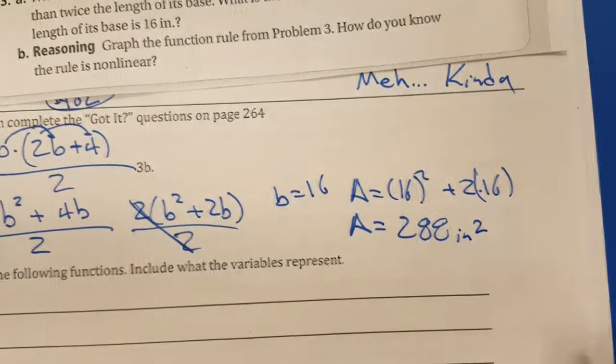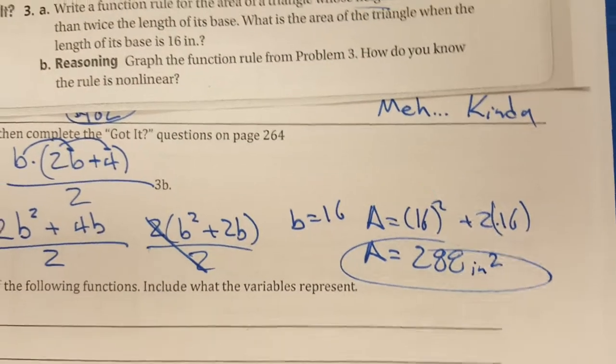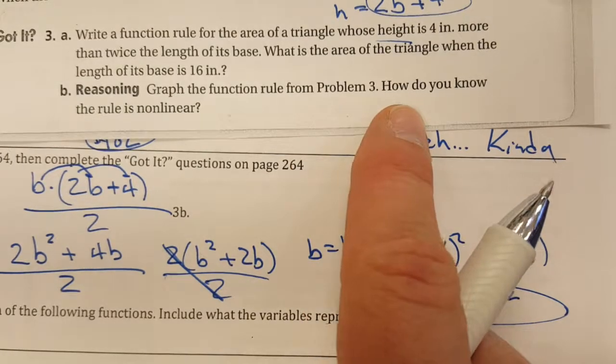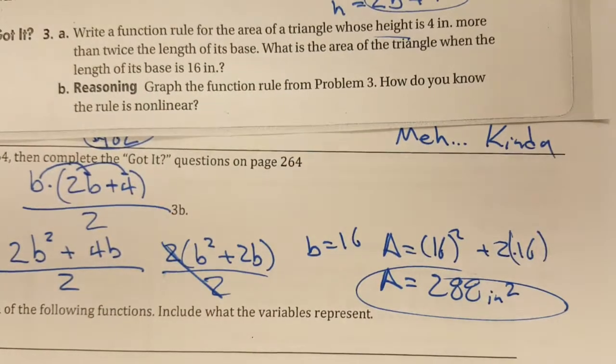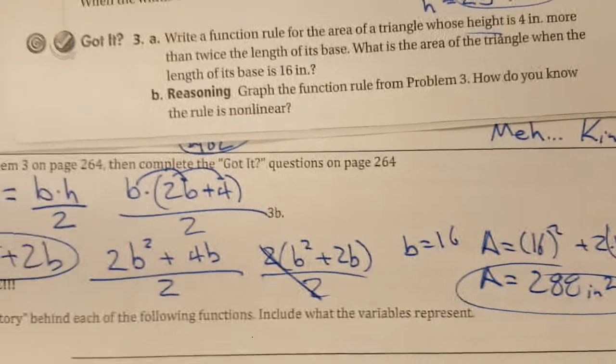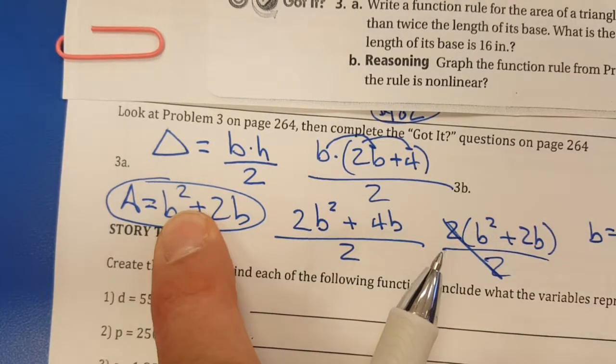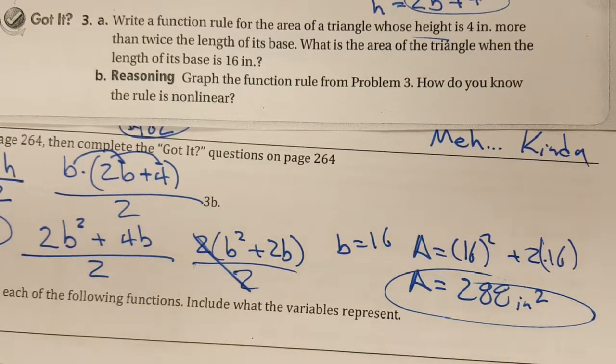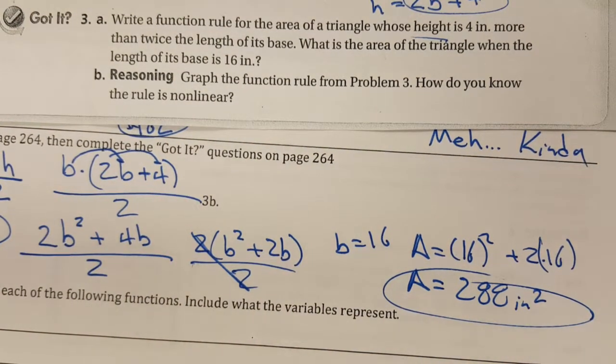Alright, there you go. Part 3B says graph the function rule from problem 3. How do you know the rule is nonlinear? I don't even really need to graph it to see that it's nonlinear. If you have a power, you are not going to be a linear line. Powers cannot ever graph straight lines; they're always going to graph curved ones.